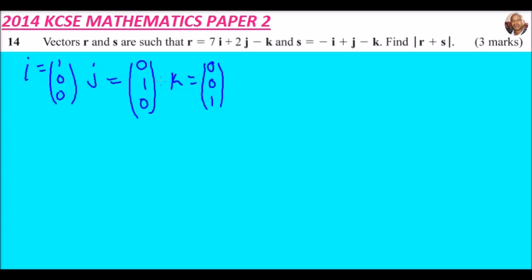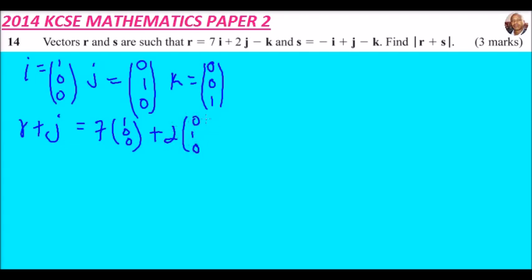When you are given r + s, you can write r and s in terms of their column vectors — also called position vectors. So we write r as: 7 times i which is (1, 0, 0), plus 2 times j which is (0, 1, 0), and our k is (0, 0, 1).